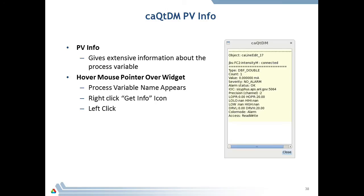Here's another way to get information about a PV on the display: PV Info. Just hover the mouse over the widget and the process variable name will pop up. Right-click and a 'Get Info' icon will appear. Left-click and you'll get detailed information on the display: the level, the value of the process variable, where it's coming from, and the high operating range set on that process variable. You get a lot more information with PV Info.